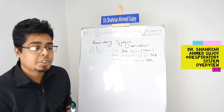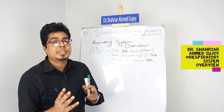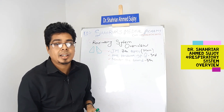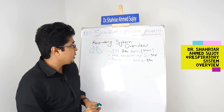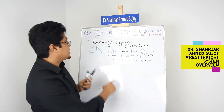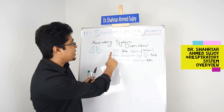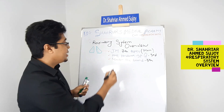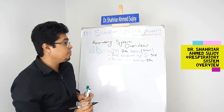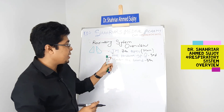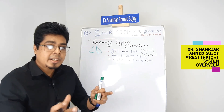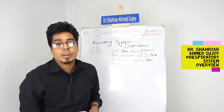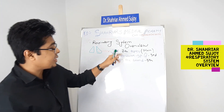Our first class is on the respiratory system. I want to give you an idea and overview before the class starts — how the classes are taken. As you can see, this is the respiratory system overview. The main book for this course is John Murtagh — we call it John Murtagh in short — and there's also the AMC Handbook and a book called Master the Board.